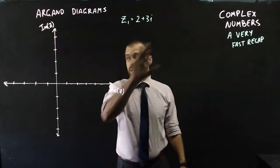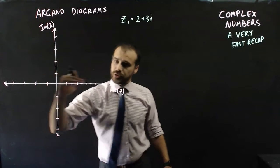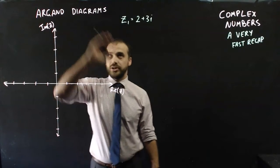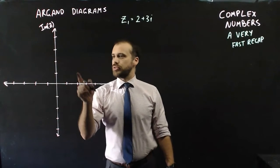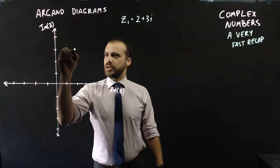And of course, any complex number can be placed on an argand diagram, where the real components go along here and the imaginary components go along here. So z1 would be 2, 3i, right there.